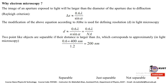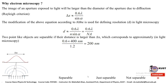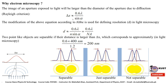The first part of the lecture is why we need electron microscopy. There is a general rule called Rayleigh's criteria: the image of an aperture exposed to light will be larger than the diameter of the aperture due to diffraction. The value of Δx should be around 0.6λ divided by sin α. This can be modified using Abbe's equation, giving resolution D equal to 0.6λ divided by n·sin α, where n·sin α is called the numerical aperture.